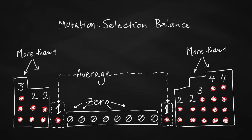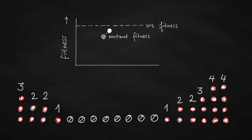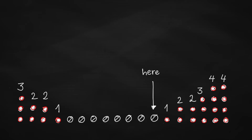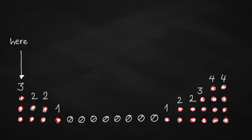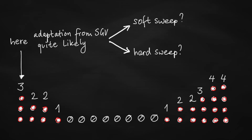Let's assume that at some point the environment changes and the mutation becomes beneficial — it could help the population adapt to the new environment, if it is present. So what if the environment changes when the mutation is not there? Then adaptation from standing genetic variation is not possible. But if the environment changes when there are several mutants, the population can use standing genetic variation to adapt to the new environment. A related question is whether adaptation from standing genetic variation occurs through soft sweeps or hard sweeps.